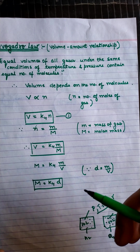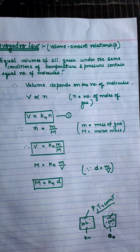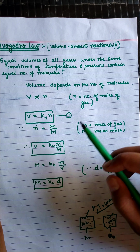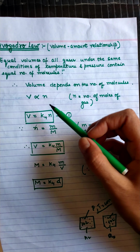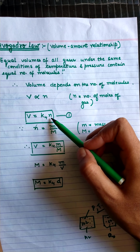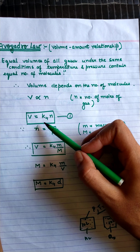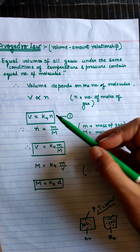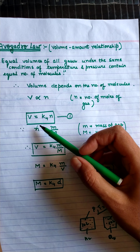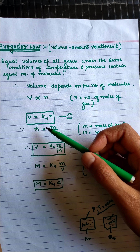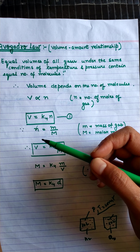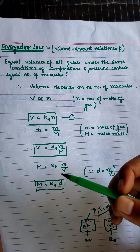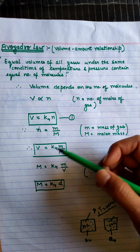We can say that volume of gas is directly proportional to the number of moles of gas. So V = k4·N, where N is the number of moles and k4 is a constant. For N = 1, one mole of gas contains about 6.022 × 10²³ particles or molecules, and this number is also called Avogadro's constant.